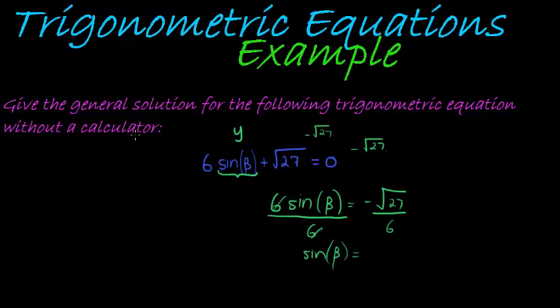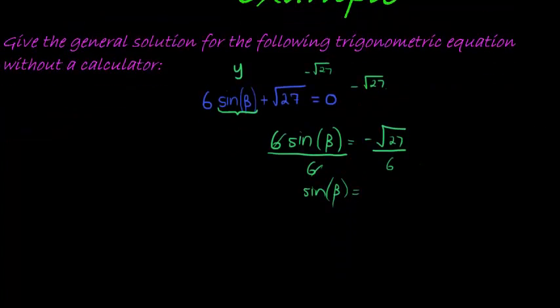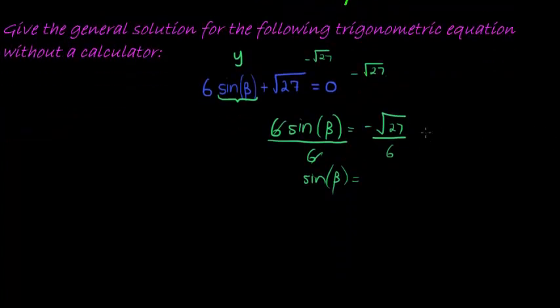They tell me I'm not allowed to use a calculator, which means that this must be something familiar. And to be honest, it doesn't look familiar to me, which means there's some simplification necessary. And one thing that we notice is that square root of 27 can be written as square root of 9 times the square root of 3, and the square root of 9 is equal to 3, divided by 6.